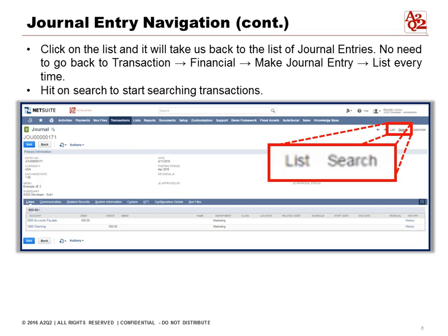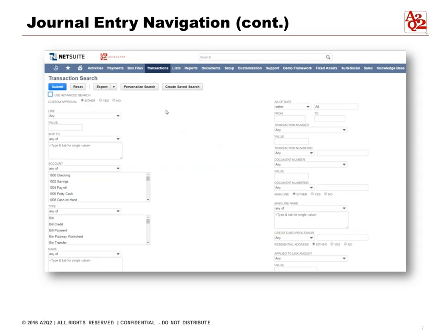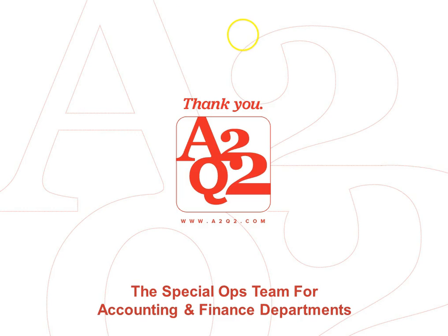And if you go into search, you can actually start searching transactions. At the top you can see it says Transaction Search, so it immediately takes you into the transaction area to search. You also have multiple criteria, such as the account, if there's a date, if there are bills, or a type of transaction, that allows you to quickly narrow down your search and be more effective.